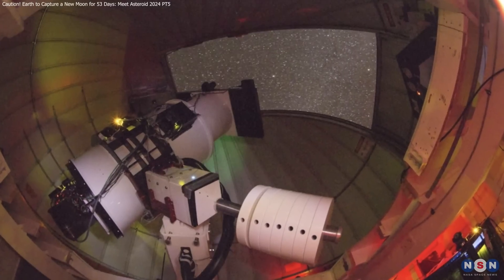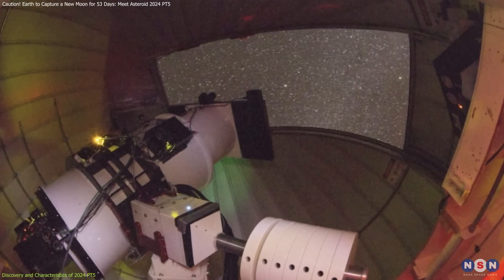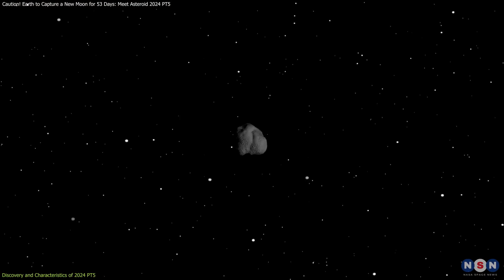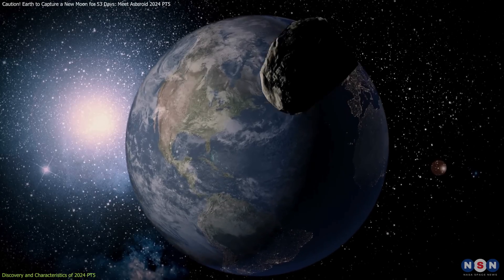Discovered in August 2024 by the Asteroid Terrestrial Impact Last Alert System, ATLAS, 2024 PT5 is a small asteroid about 10 meters in diameter that was identified as a potential mini-moon for Earth.